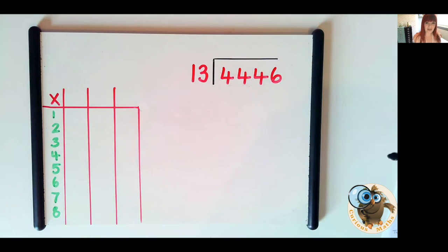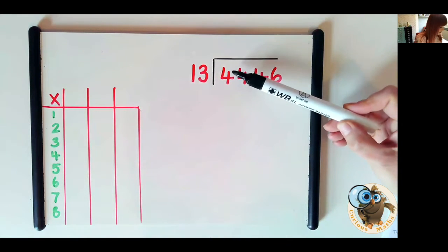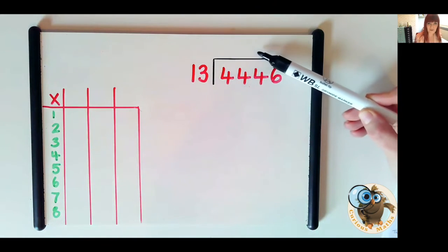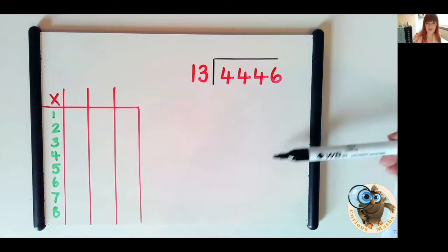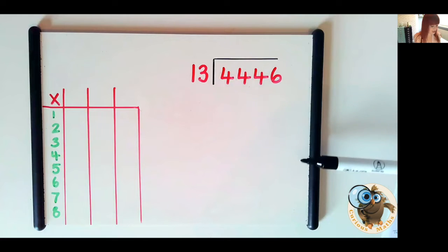Short division is the short hand version where we simply put the regrouped number here and we write the answer at the top. There's nothing written underneath the short division and that's the difference. So long division is long hand down the page and the reason sometimes children find it a bit tricky is because they're including so much information, but what they need to understand is that all of that information they're calculating anyway, we're just going to write it down.